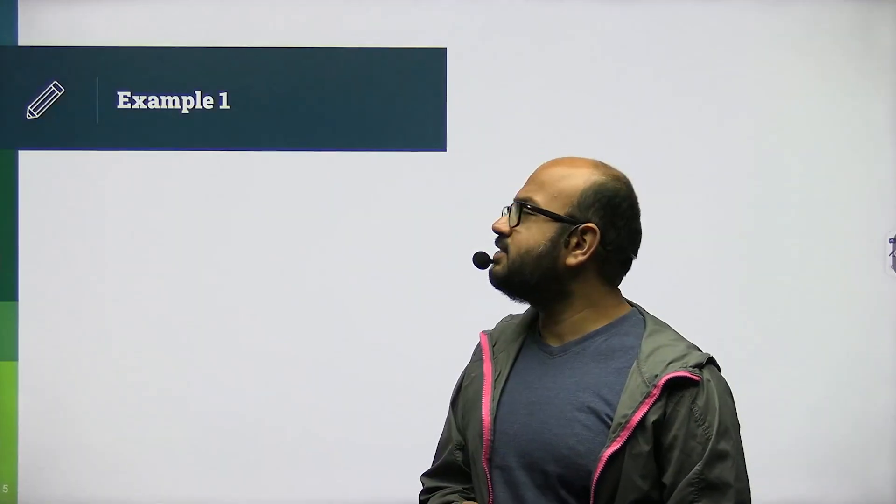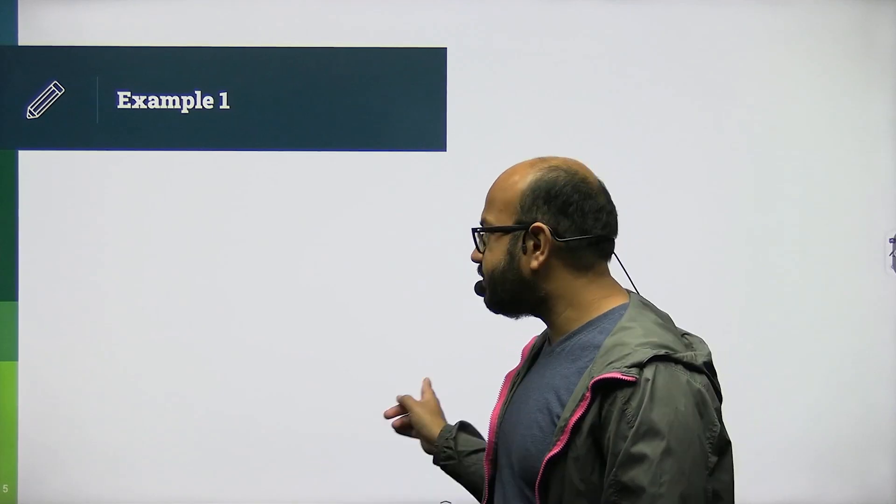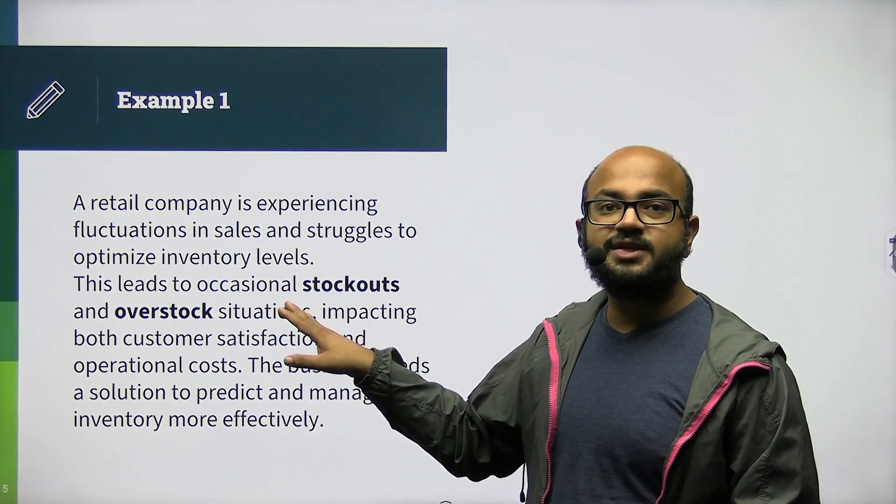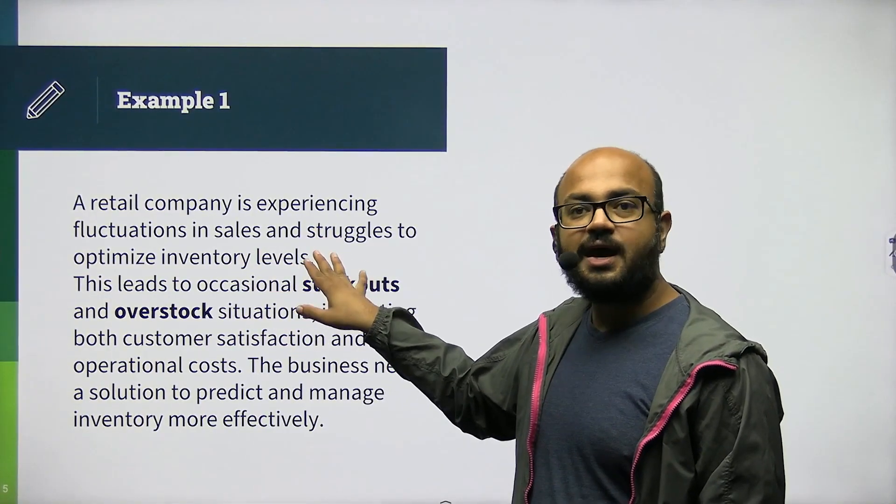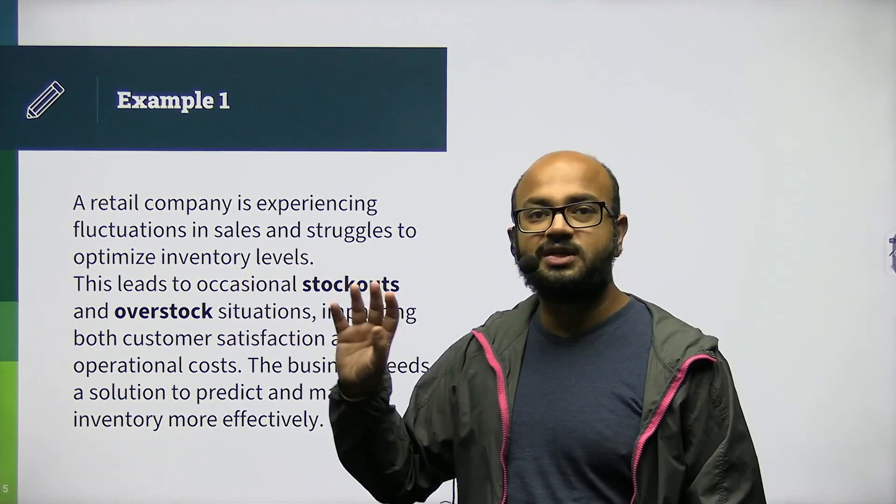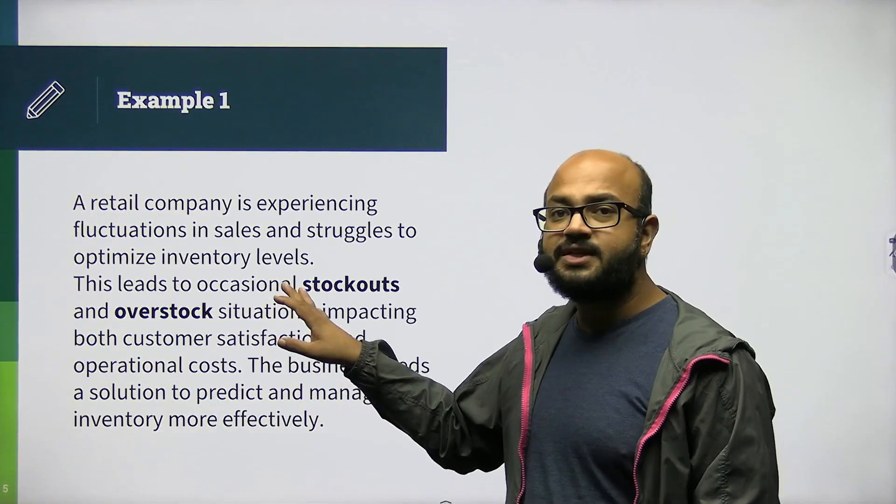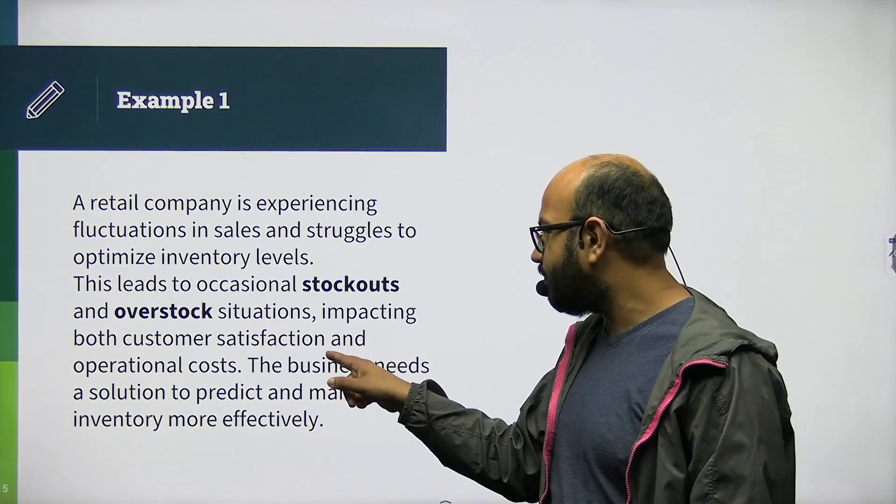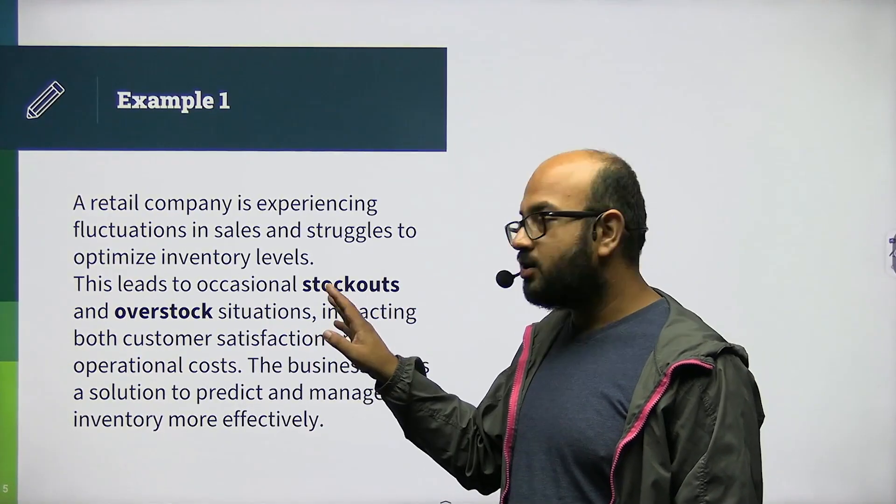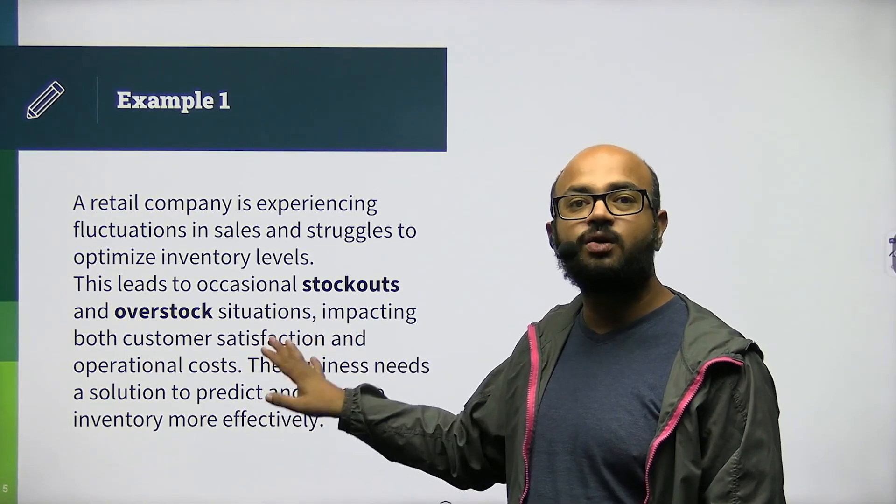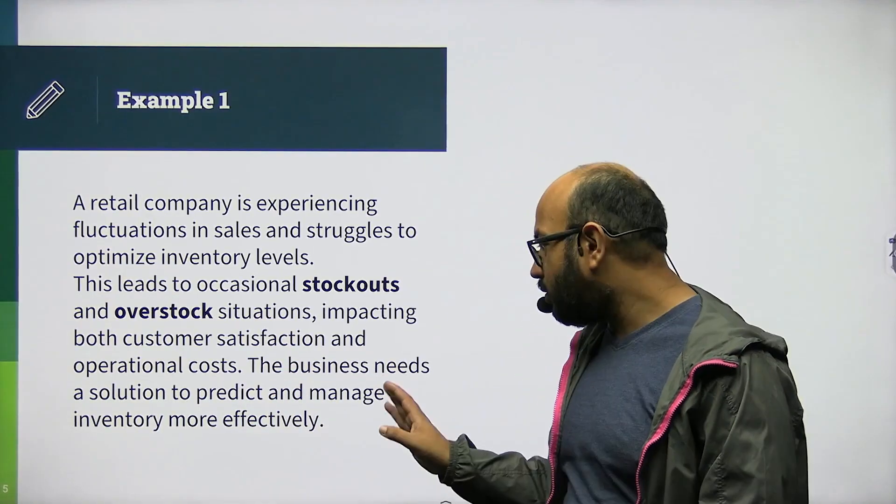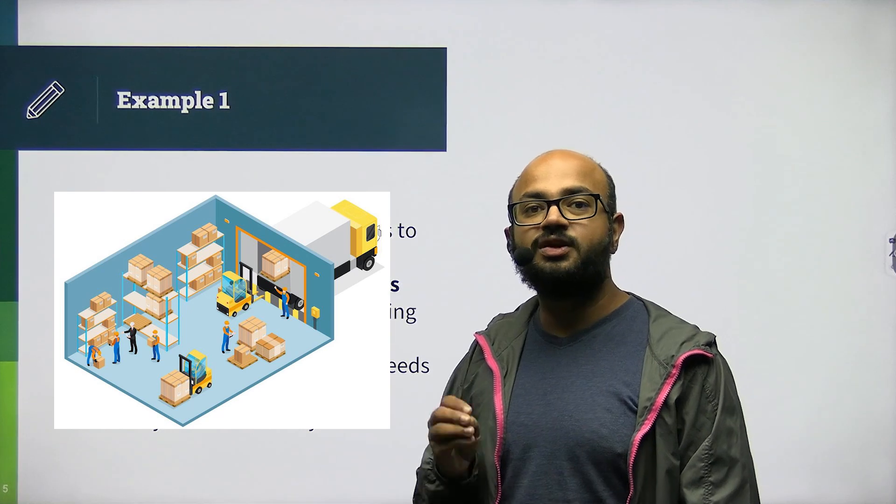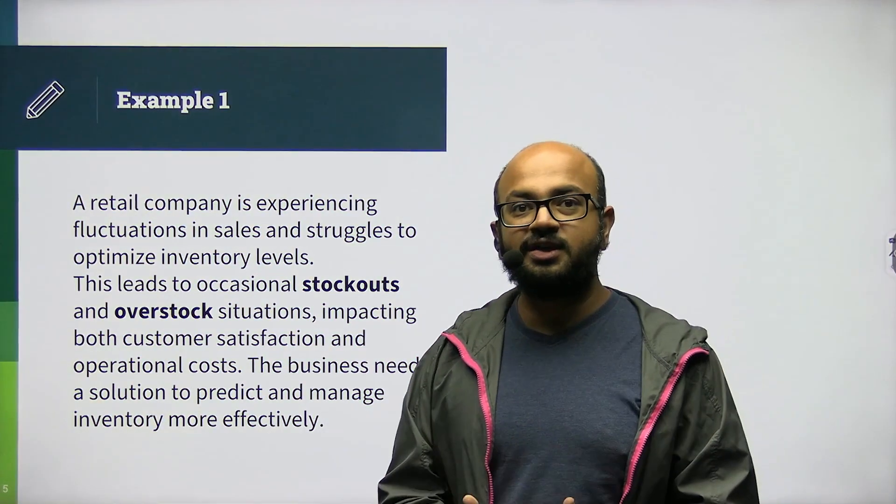In fact, let's just try a couple of examples. A retail company is experiencing fluctuations in sales and struggles to optimize inventory levels. This leads to stock out and, in fact, the inverse scenario as well, overstock. This impacts both customer satisfaction and operational cost. Now, the business needs a solution to predict and manage inventory more efficiently.